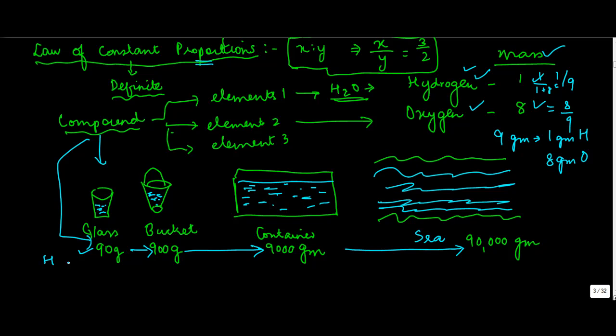So what the law of proportion says is that if this is 90 gram, then hydrogen will be 10 gram and oxygen will be 80 gram. Meaning that the ratio is 1 is to 8. Oxygen will always be 8 times of hydrogen. If it is 900 gram, this will be 100, this will be 800. For 9,000, it's gonna be 1000 and 8,000. If it is 90,000 gram, it has to be 10000 and 80000 gram.